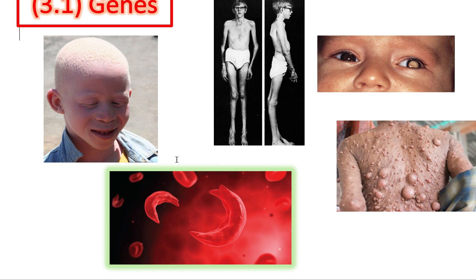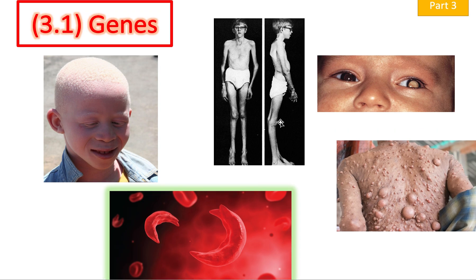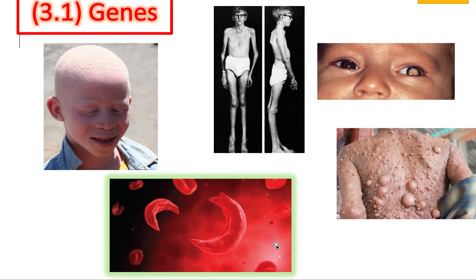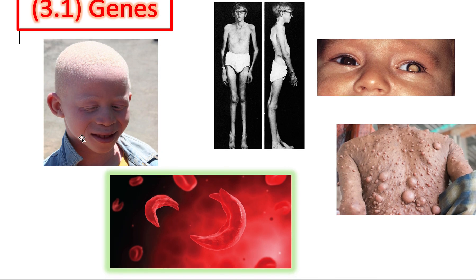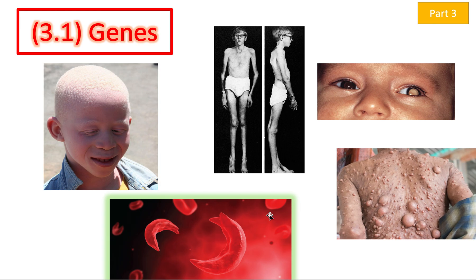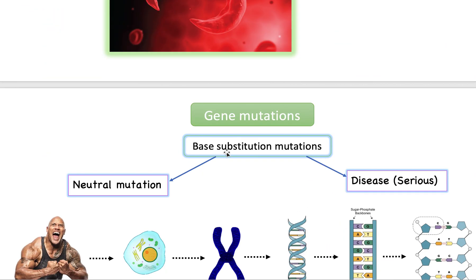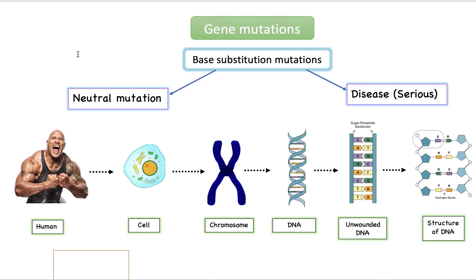Sickle cell anemia is the one you have to know for the IB. All of these — like Marfan syndrome and albinism — happen through a similar mechanism, but you only need to know about sickle cell anemia. The effects this disease has are much greater and actually pretty scary. So let's get into it. I talked about the neutral or silent mutation in part 2, but now we're going to be focusing on disease.